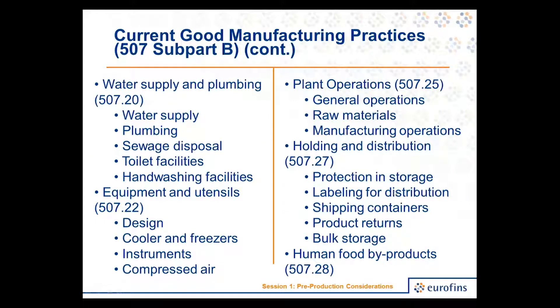Then we get into things like water supply and plumbing. We have to make sure that we have potable water, especially if it's used in the facility for hygiene, sanitation activities, or as an ingredient. We talk about hand-washing facilities and toilet facilities for employees. Then equipment and utensils — proper design, no contamination. Plant operations should be designed to minimize contamination to the product, with proper holding, distribution, and labeling.